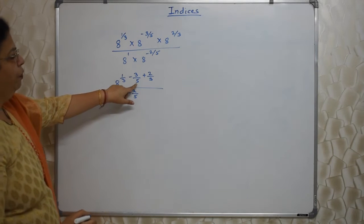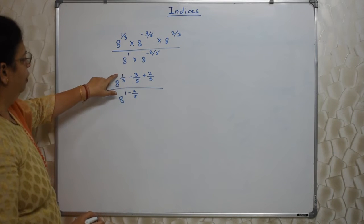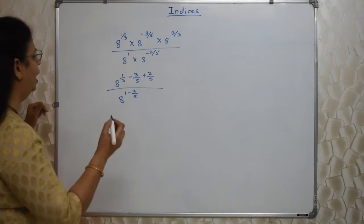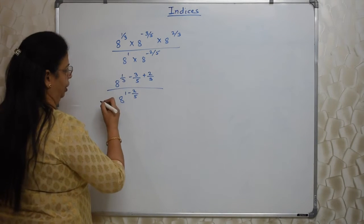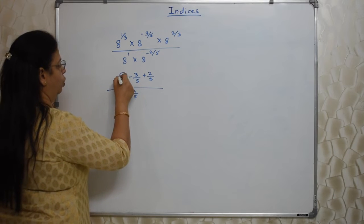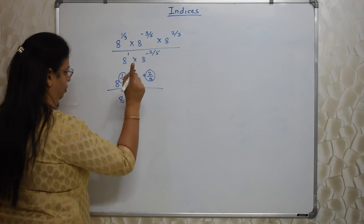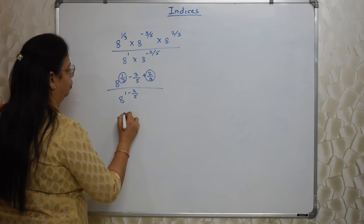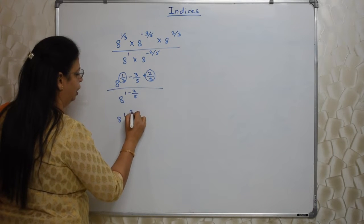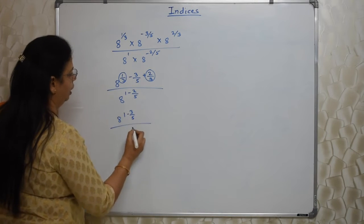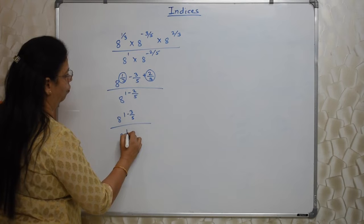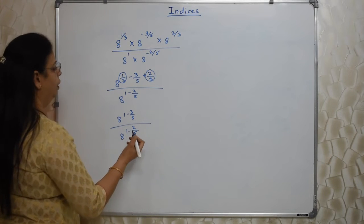Now we are observed. Directly students find out the LCM. No need. 1/3, 2/3, first add that. That is 3/3, so 1. So these two together total is 1. So we can rewrite this: 1 and then -3/5. Similarly down 8^(1 - 2/5).